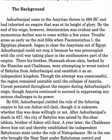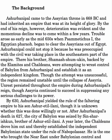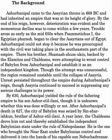The background: this tells us about the fall of Assyria and the rise of Babylon. Ashurbanipal came to the Assyrian throne in 668 BC and inherited an empire that was at its height of glory — Assyria controlled that part of the world. By the end of his reign, however, deterioration was evident, and the momentous decline was to come within a few years. Trouble arose as early as the mid-650s when Psamtik I, the Egyptian pharaoh, began to clear the Assyrians out of Egypt. Ashurbanipal could not stop it because he was preoccupied with a civil war in the southeastern part of the empire.